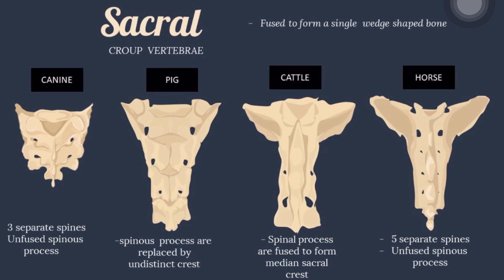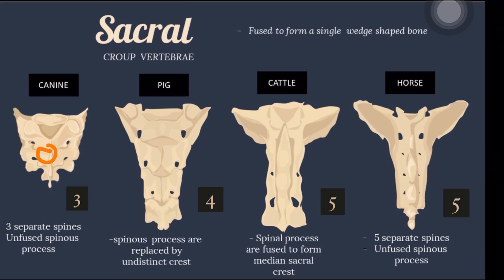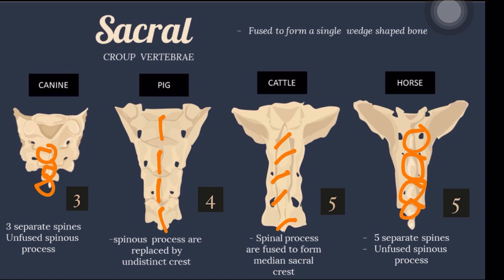Comparing the sacrum of animals: In the canine, it has 3 separate, unfused spinous processes. In the pig, the spinous processes are replaced by indistinct crests. In the cattle, the spinous processes are fused to form a medial sacral crest. In the horse, there are 5 separate, unfused spinous processes. There are 3 sacral vertebrae in the canine, 4 in the pig, 5 in the cattle, and 5 in the horse.